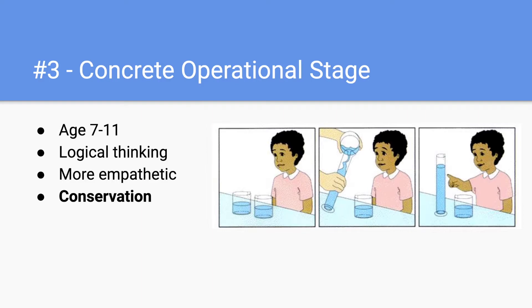Next we have the concrete operational stage, and this is from ages seven to eleven. Children at this stage begin to show logical thinking and become a bit more empathetic compared to the previous stage. Importantly, this is when children begin to understand conservation.